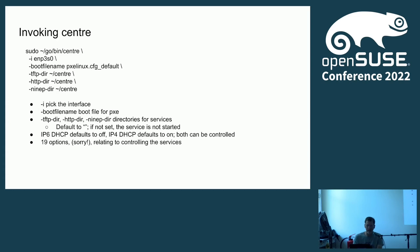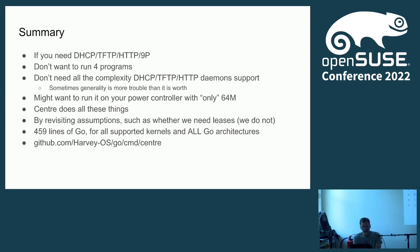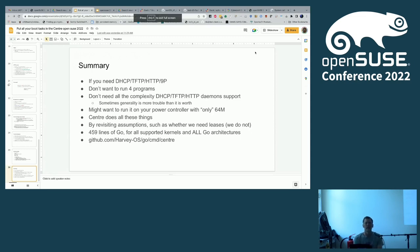I'll make these slides available. If you need DHCP and you don't really want to run four daemons, you'd like to run one and control it better, and you're tired of all these weird config files and lease files — this might work for you. It's 459 lines of Go. It's at github.com. You're welcome to take a look, send me bug reports, and tell me better ways to do things. I'd be delighted if any of you want to take a look and see what you think.